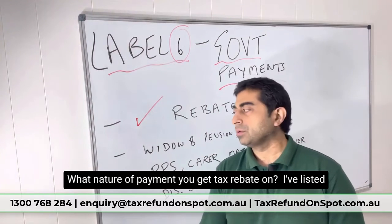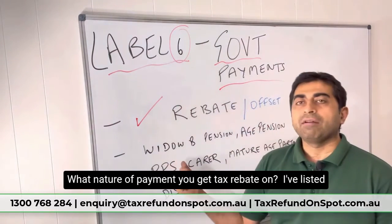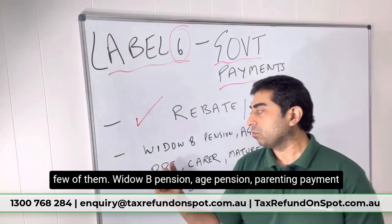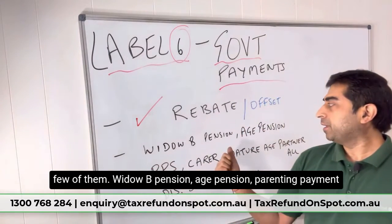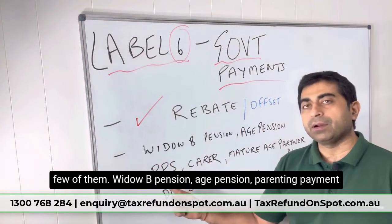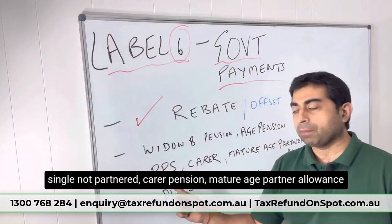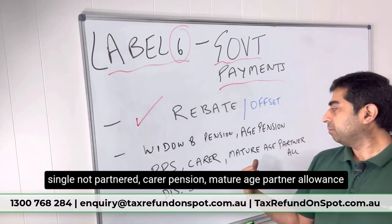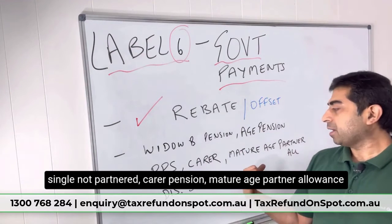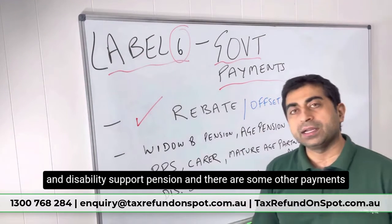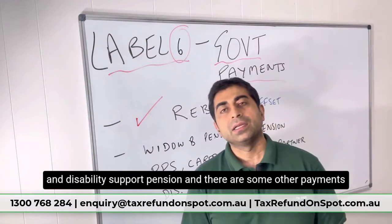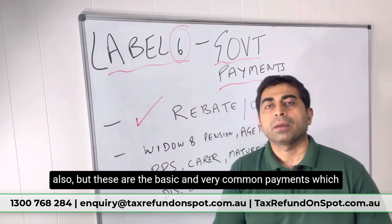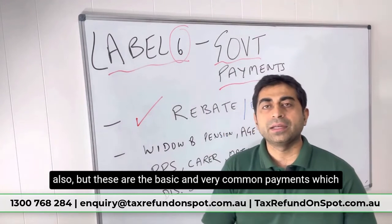Now, what kind of payments attract tax rebates? I have listed a few of them: widow B pension, age pension, parenting payment single (not partnered), carer pension, mature age partner allowance, and disability support pension. There are some other payments also, but these are the basic and very common ones.